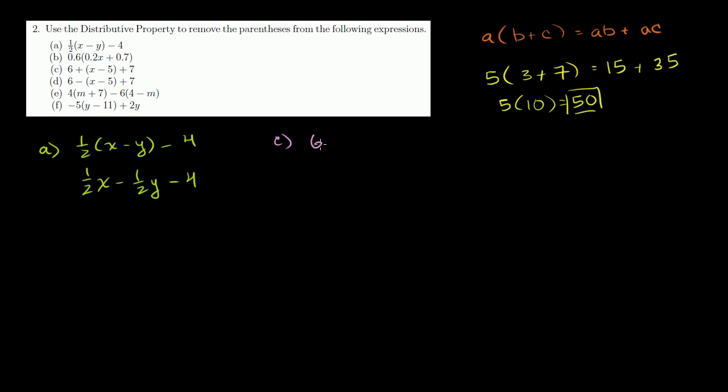Let's do c. We have 6 plus x minus 5 plus 7. Well, here there's actually no distributive property to even do. We can actually just remove the parentheses. 6 plus this thing, that's the same thing as 6 plus x plus negative 5 plus 7. Or you could view this as 6 plus, so this right here is 2. Negative 5 plus 7 is 2. 2 plus 6 is 8, so it becomes 8 plus x.